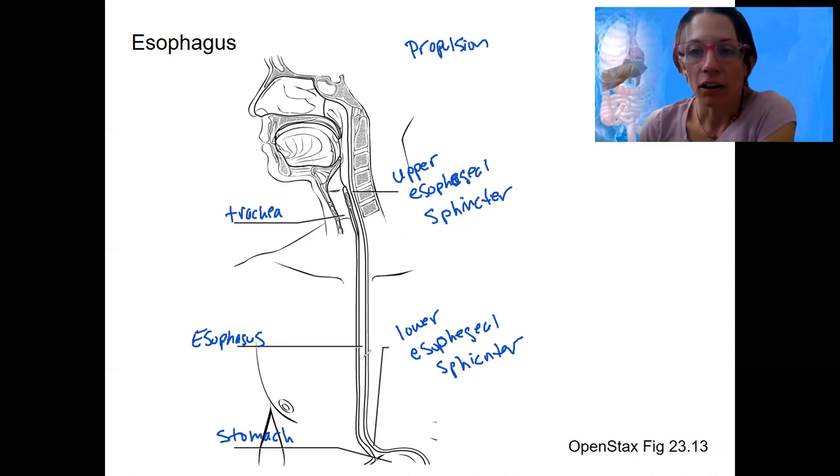We are going to have this muscular tube. Remember, we've already talked about how most of the alimentary canal is a muscular tube. We're going to have the upper two-thirds of the esophagus, and we'll look at the histology in just a moment, be both smooth and skeletal muscle. So there's going to be some kind of conscious control with that skeletal muscle.